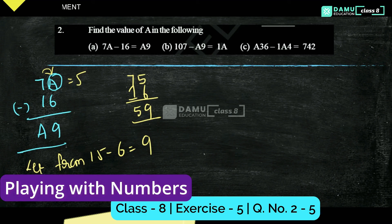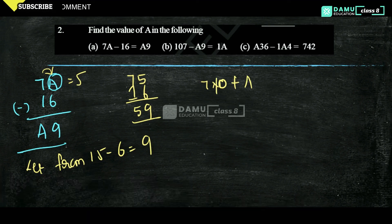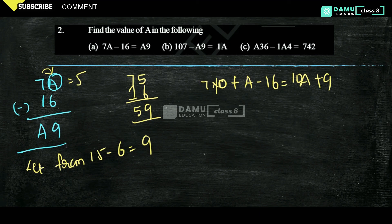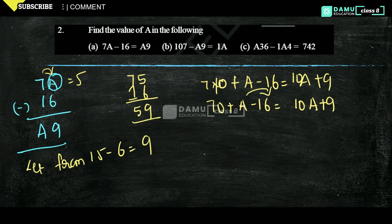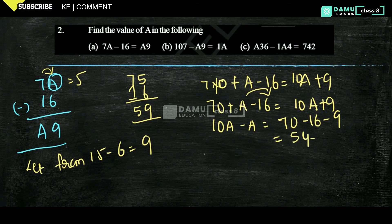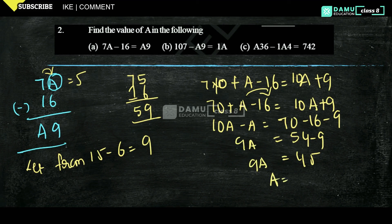Or you can do another method using expanded form: 7 into 10 plus A minus 16 equals 10A plus 9. So 70 plus A minus 16 equals 10A plus 9. Transposing: 10A minus A equals 70 minus 16 minus 9, which gives 54 minus 9 equals 45. So 9A equals 45, and A equals 45 divided by 9, giving A equals 5.